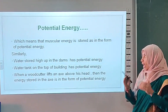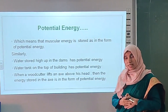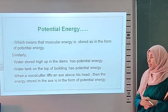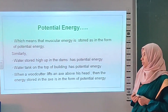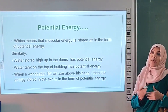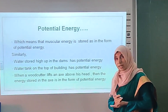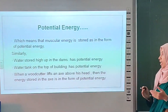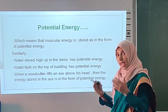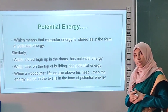Muscular energy is stored in the form of potential energy. More examples: water stored higher in a dam has potential energy. Water placed on the top of a building has potential energy. One more example — when a spring is compressed, the energy stored in the spring is in the form of potential energy.